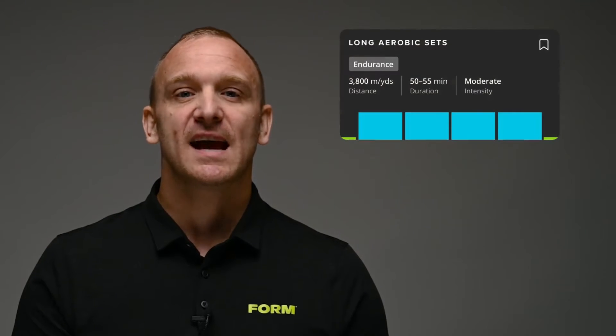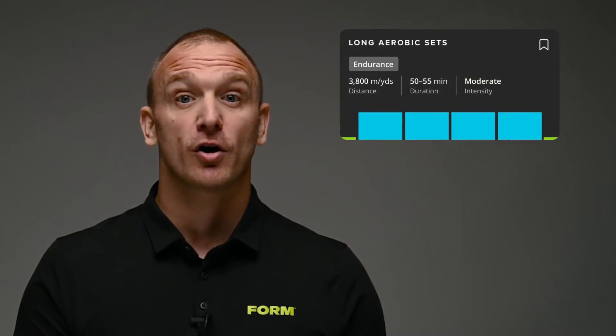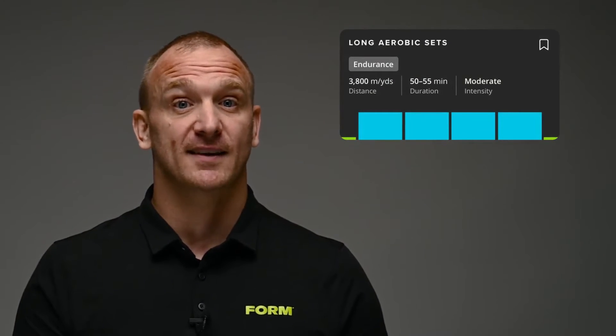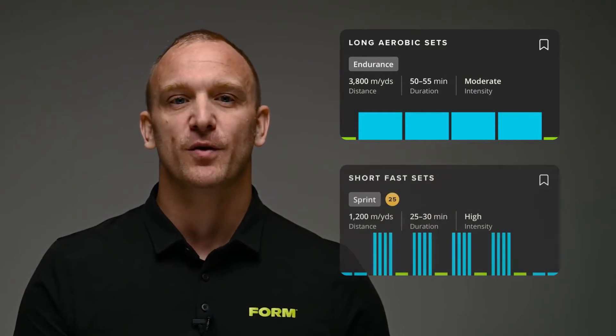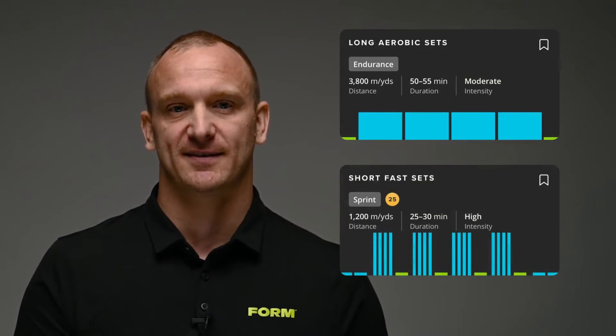Form score is best used when applied to training that most closely resembles your goals in the water. For instance, if you're training for an Olympic distance triathlon, seeing how your form score changes throughout longer intervals and sets may be more important for you than during shorter, faster sets.